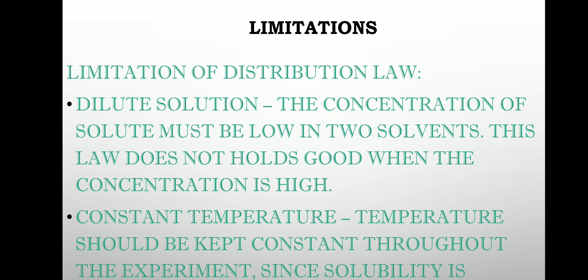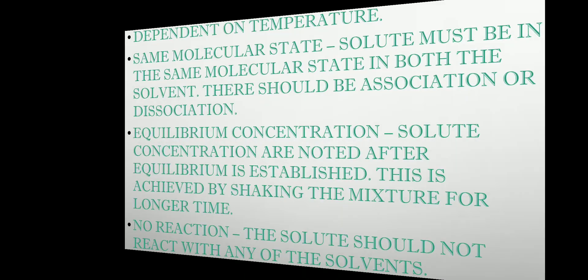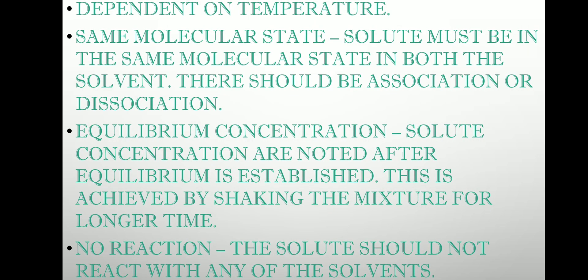The first limitation is dilute solution — the concentration of solute must be low in both solvents. This law does not hold good when the concentration is high. The second limitation is constant temperature — temperature affects solubility, and since temperature rise can affect distribution, you must always maintain a constant temperature to get a constant distribution coefficient ratio.